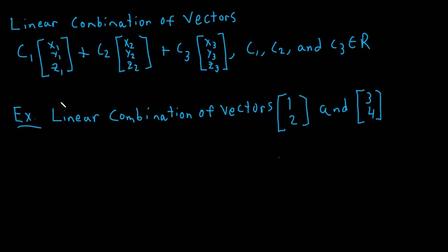Before we solve this problem, we need to learn what a linear combination of vectors actually is. I have vectors x1, y1, z1; x2, y2, z2; and x3, y3, z3. I'm taking a linear combination with coefficient c1 in front of the first vector, c2 in front of the second, and c3 in front of the third. We call it a linear combination because all the coefficients are real numbers — there are no squared or cubed terms.